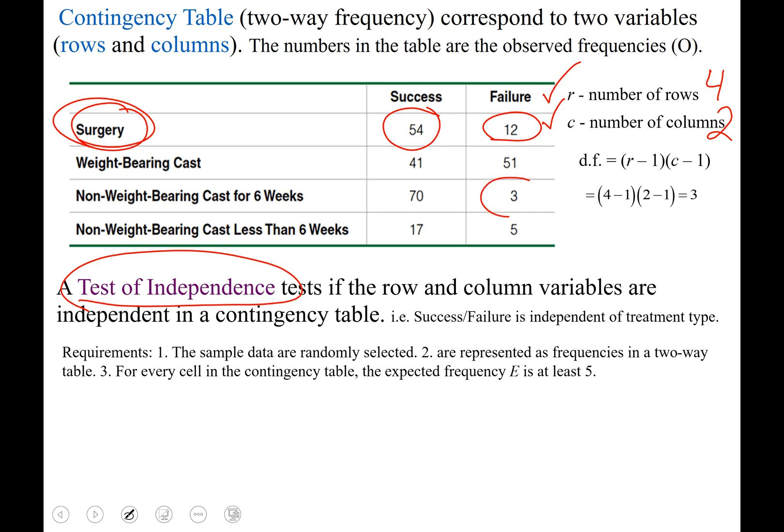So you may see this three right there and go, oh no, this doesn't have an expected value of at least five. But remember that this table is not the expected outcomes, this is the observed outcomes, the capital O.